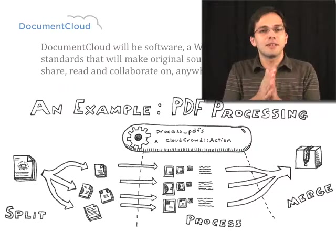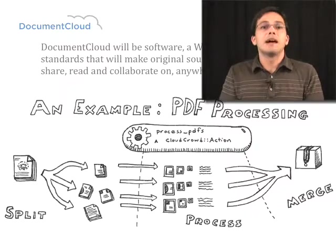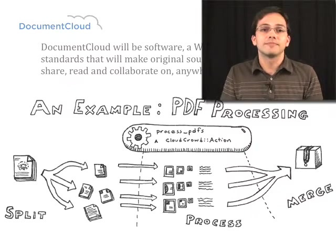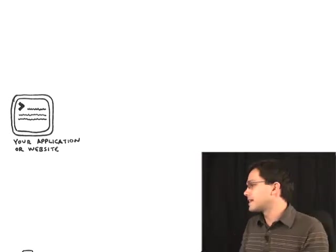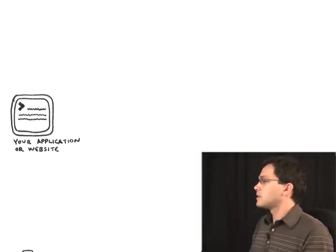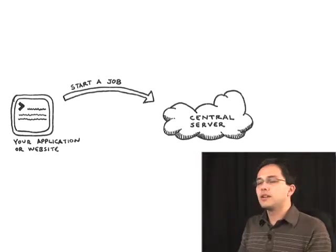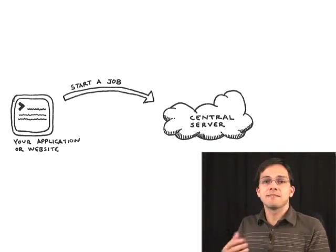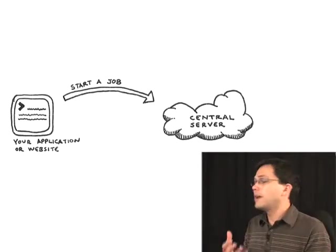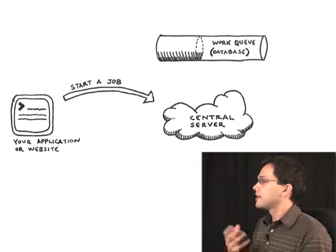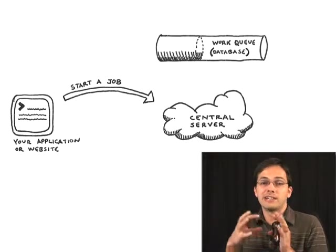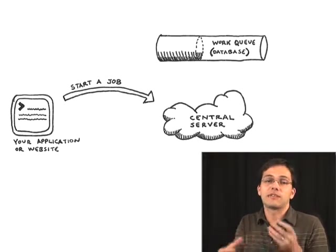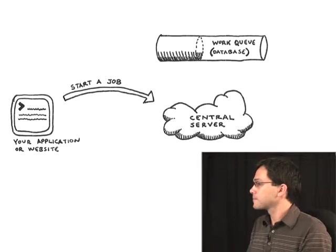So they solved this by implementing Cloud Crowd. The anatomy of a Cloud Crowd application might look something like this. Here's our web application — once a PDF comes in, we might submit that to a central server. That central server is going to have a work queue or a database to keep track of all the jobs that are coming in that need to be done.